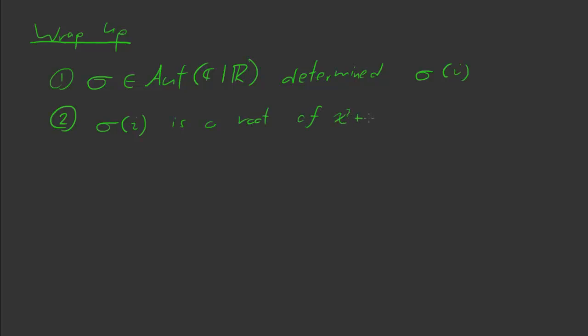Just wrapping up. So, we know that any σ inside of Aut(ℂ|ℝ) is determined by σ(i). And we know that σ(i) is a root of x² + 1. There are only two roots. There are only two complex roots of x² + 1. Namely, i and negative i. So, we're going to get that σ(i) is either equal to i or σ(i) is equal to negative i. And these are the only two choices because there are only two roots here. And this totally determines σ.